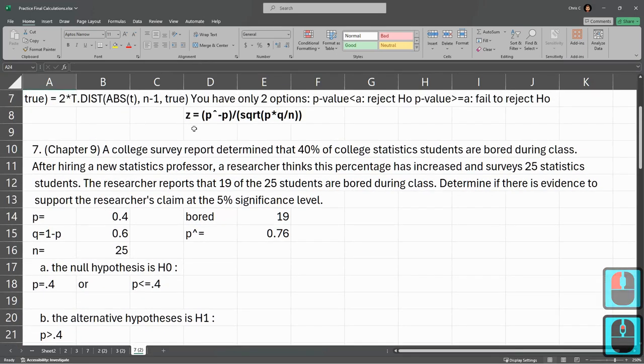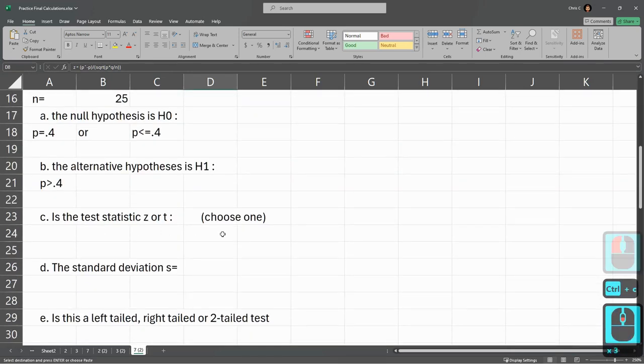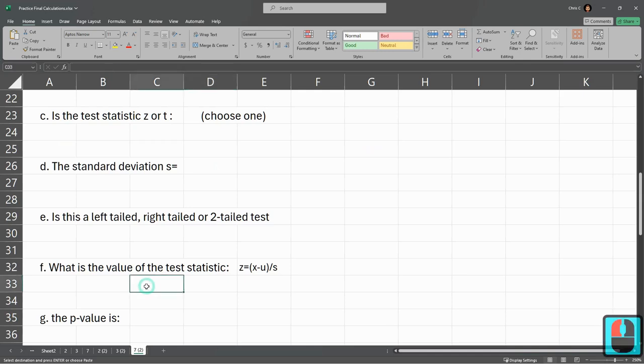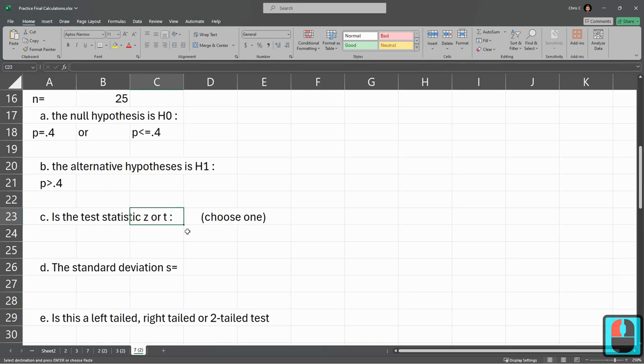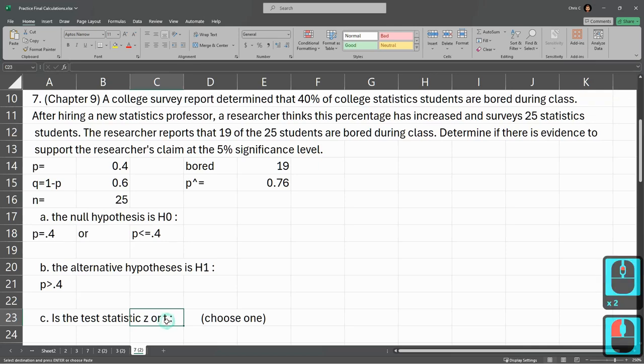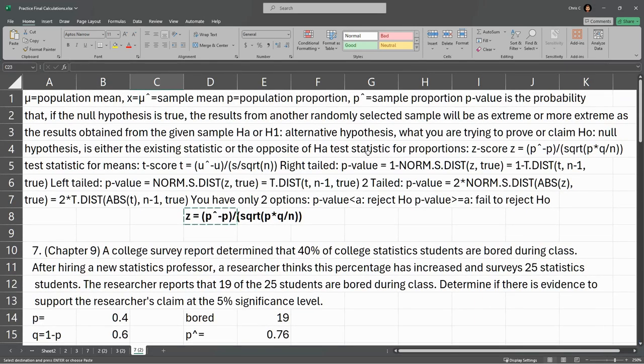Test statistic. So I'm going to copy this, and that's what we need to compute. We're going to compute the value down there. Now, is this Z or T? We have to choose one. So if it's a proportion, it's Z, and if it's a mean, it's T. And somewhere up here it should say that. Test statistic for proportions is Z equals. Test statistic for means is a T score or a T equals.